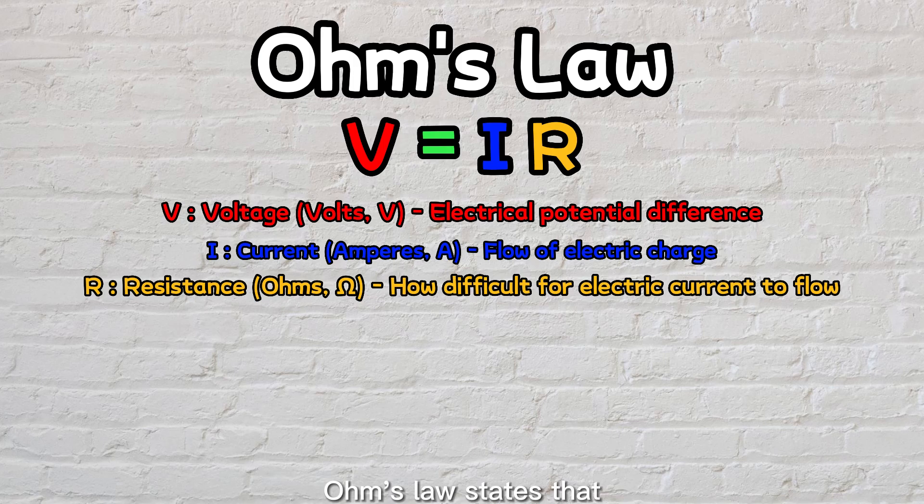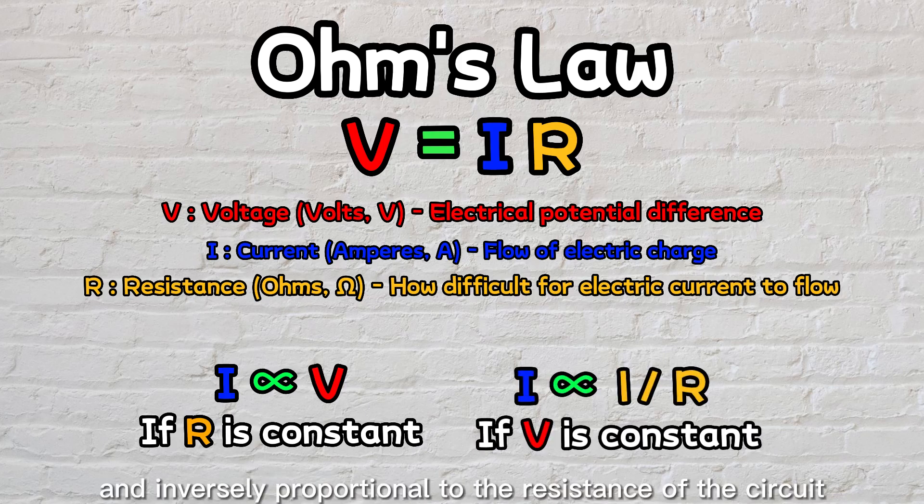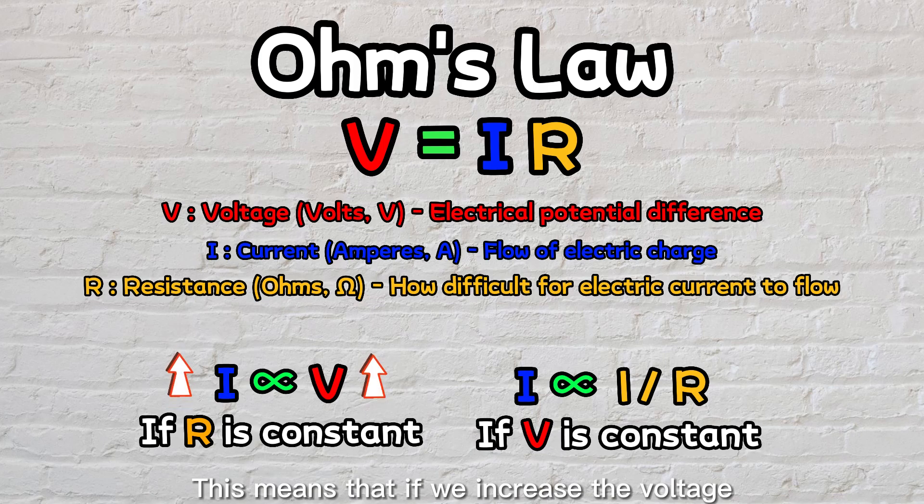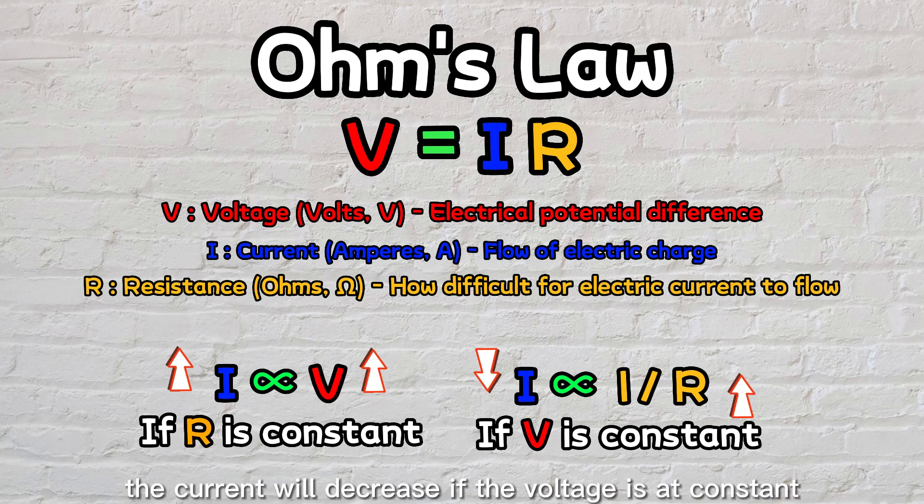Ohm's law states that the current flowing through a circuit is directly proportional to the voltage applied, and inversely proportional to the resistance of the circuit. This means that if we increase the voltage, the current will also increase, if the resistance is constant. However, if we increase the resistance, the current will decrease, if the voltage is constant.